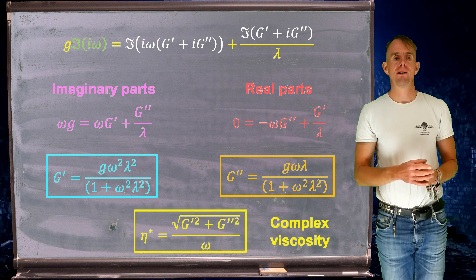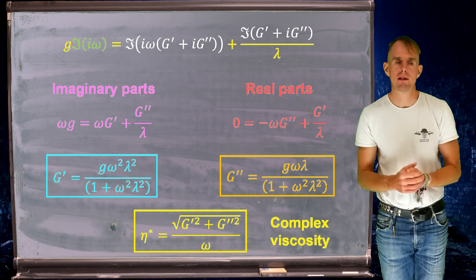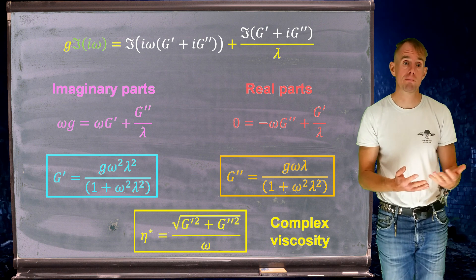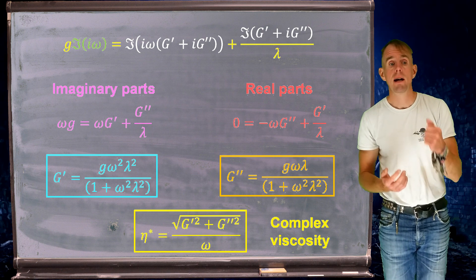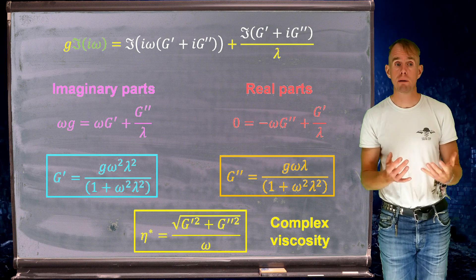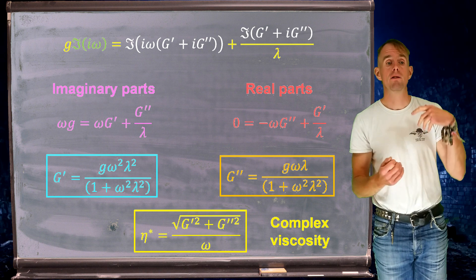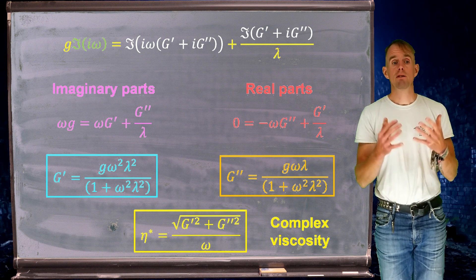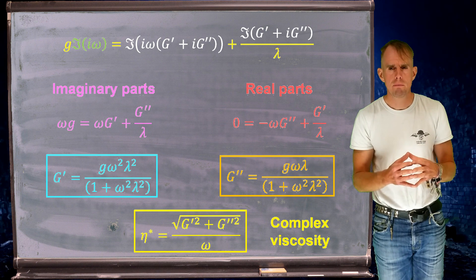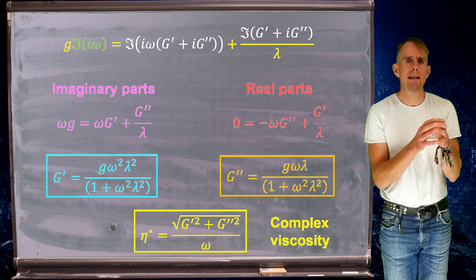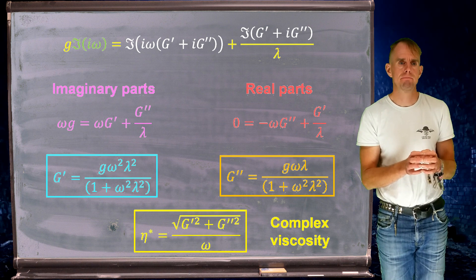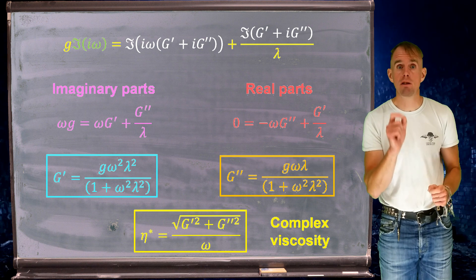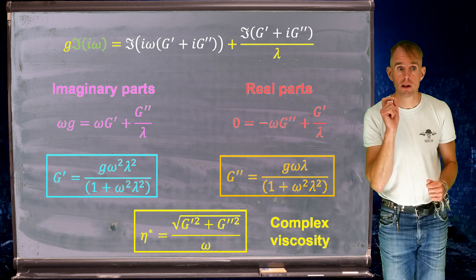We can also derive something that looks like a viscosity. G prime and G double prime have units of Pascal, and angular frequency has units of radians per second. So the quotient of these quantities has units of Pascal seconds — this is the complex viscosity eta star, representing the resistance to flow for an oscillatory motion of a Maxwell element. It is not the same as the resistance to flow in steady shear — complex viscosity eta star is different from shear viscosity eta, and we'll discuss the differences in a future lecture.